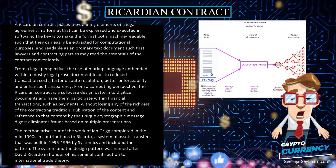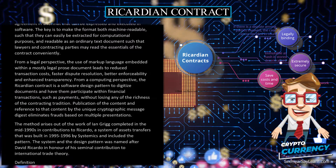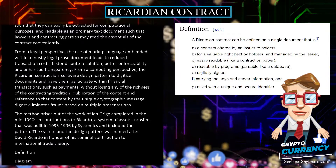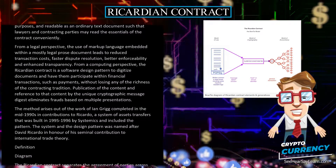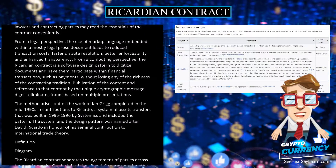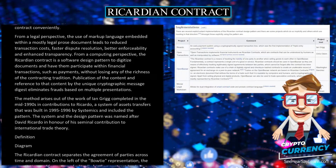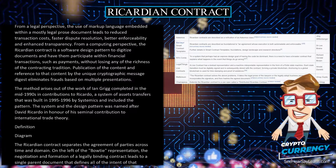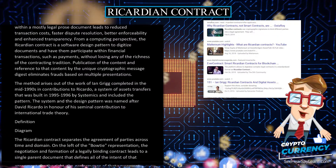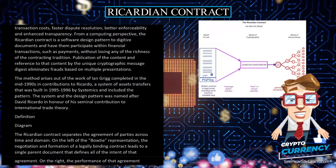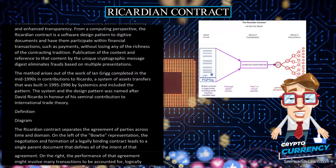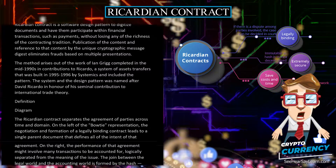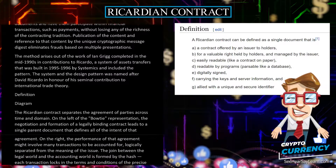From a computing perspective, the Ricardian Contract is a software design pattern to digitize documents and have them participate within financial transactions, such as payments, without losing any of the richness of the contracting tradition. Publication of the content and reference to that content by the unique cryptographic message digest eliminates frauds based on multiple presentations. The method arises out of the work of Ian Grigg completed in the mid-1990s in contributions to Riccardo, a system of asset transfers built in 1995–1996 by Systemics. The system and design pattern was named after David Ricardo in honor of his seminal contribution to international trade theory.